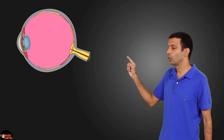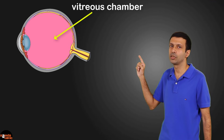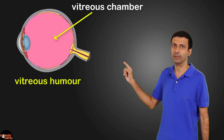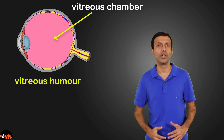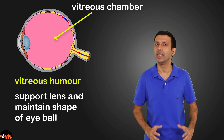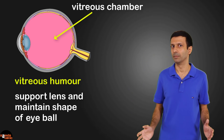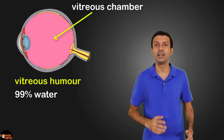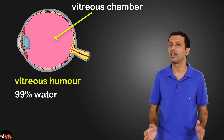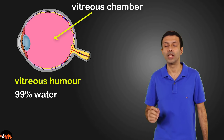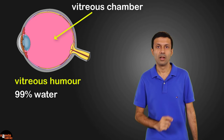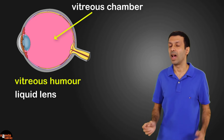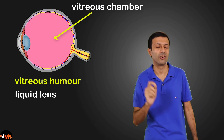Behind the eye lens, there is a space called the vitreous chamber. It contains a fluid called the vitreous humor, whose function is to support the lens and maintain the shape of the eyeball. The vitreous humor is 99% water and contains no cells, so that light can pass through it without being deflected. This fluid acts like a liquid lens and further helps to focus the light rays on the retina.